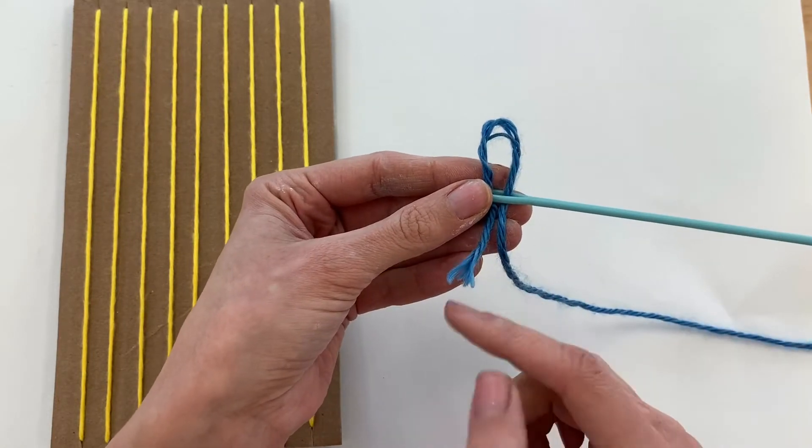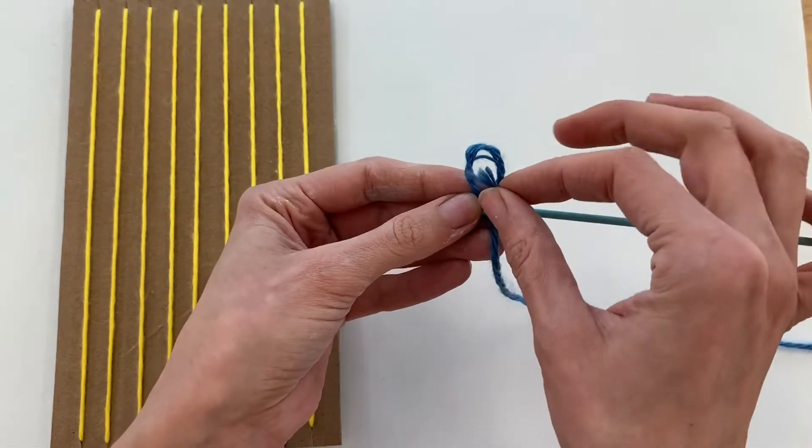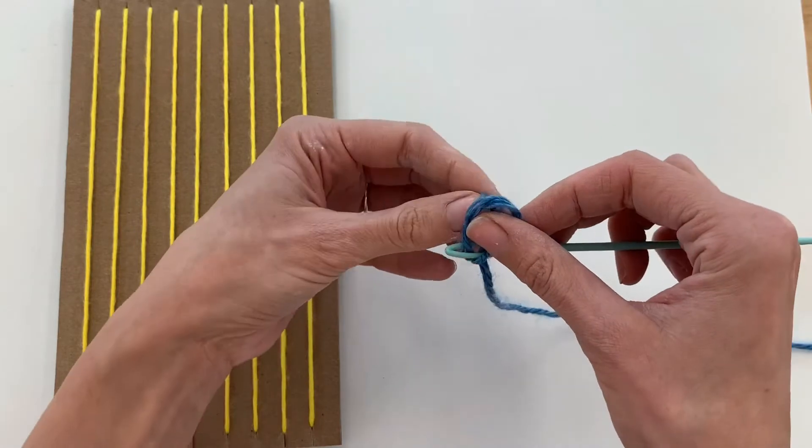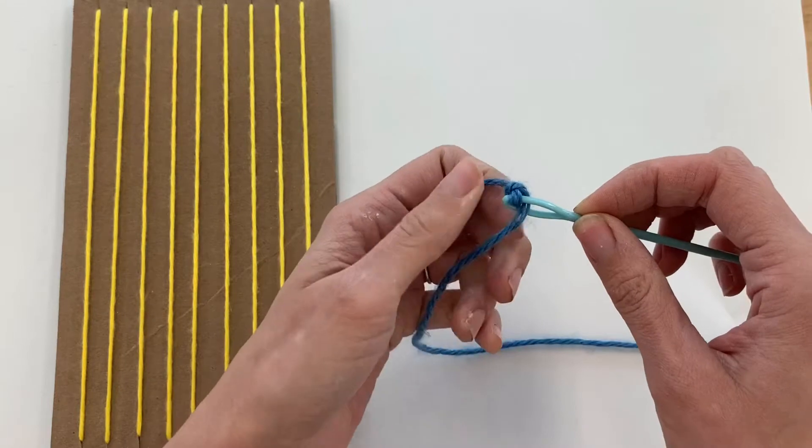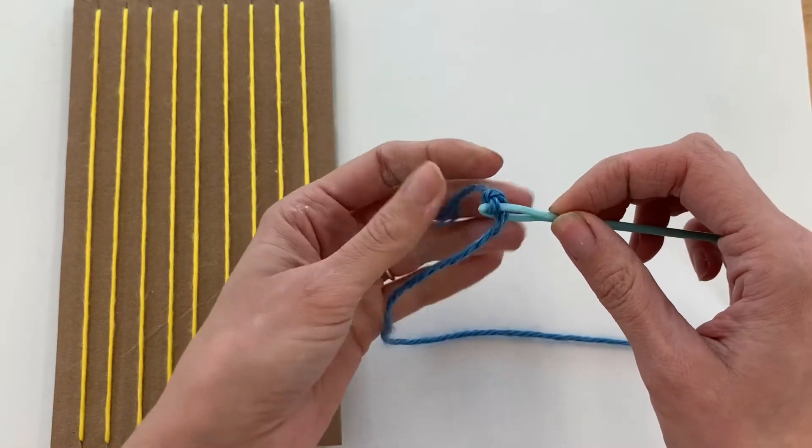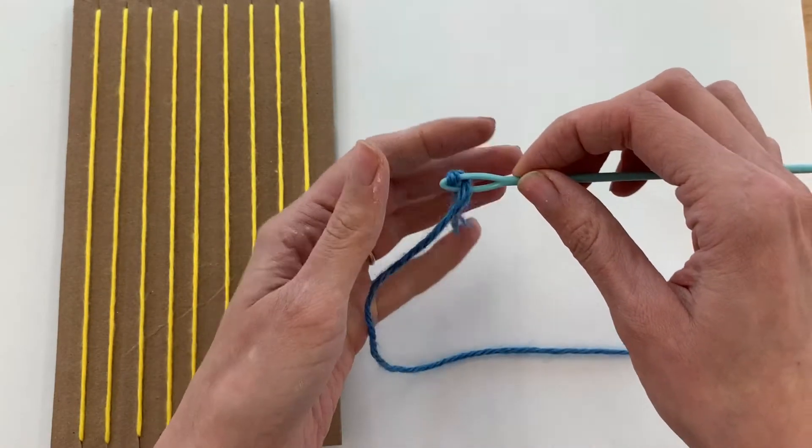And then this little tail that's sticking out is going to go through that loop, like this. And then I'm just going to pull both ends. This makes it really easy to take on and off, if this falls off while you're weaving you can just put it back on the same exact way we just put it on there.